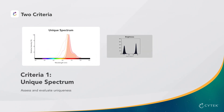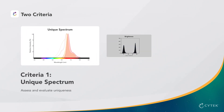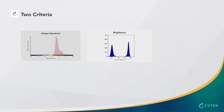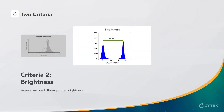First, the emission profiles of each fluorochrome used in a panel must be unique. We will discuss how to evaluate the uniqueness of fluorochrome spectral signatures. Second, as we covered in the previous video, we need to balance fluorochrome brightness with target antigen density in our cells of interest. We will discuss how fluorochrome brightness is assessed and the metric used for brightness ranking.